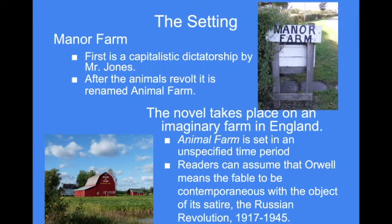Looking at the setting of Manor Farm — it is at the very beginning a dictatorship run by Mr. Jones. After the animals revolt, they rename it Animal Farm. The novel takes place on an imaginary farm in England. Animal Farm is set in an unspecified time period, and readers can assume that Orwell means the fable to be contemporary with the object of its satire — the Russian Revolution — so sometime between 1917 and about 1945.